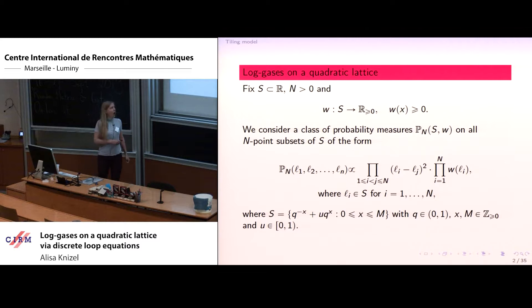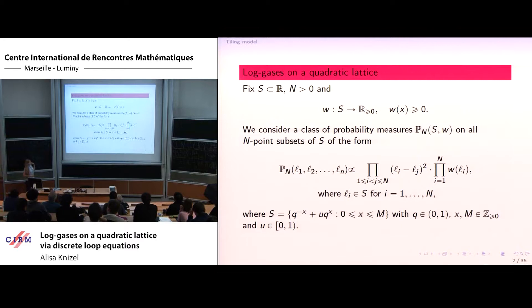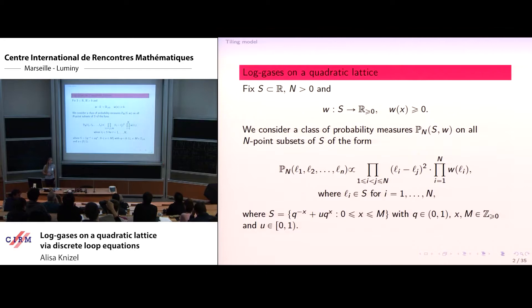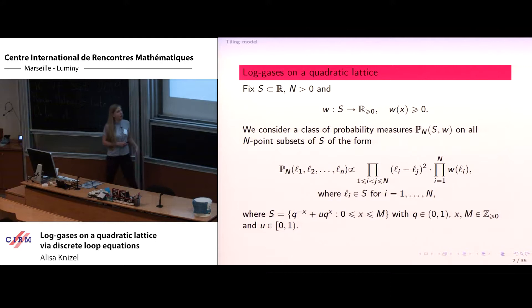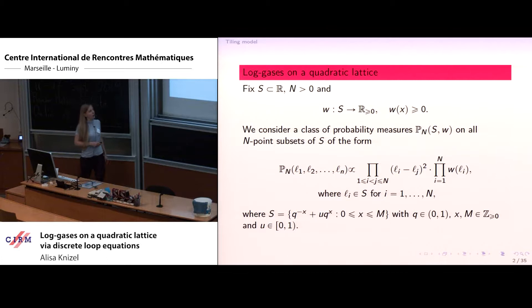So that's where the name comes from. We are concerned with the study of the law of large numbers and the fluctuations of the linear statistics of this type of ensembles for quite a general class of weight functions. The Vandermonde is in L_i, not in Q to the L_i. The L_i are points of the type Q to the power minus X_i plus U Q to the power X_i. In particular, the examples of such ensembles when U equals zero are all classical Q-polynomials from the Askey scheme — the orthogonal ensembles associated with those weight functions.